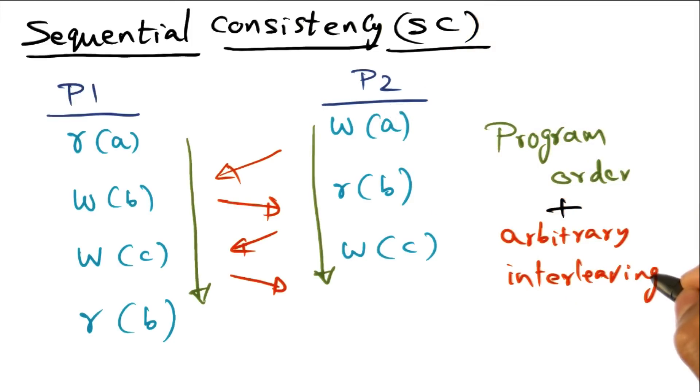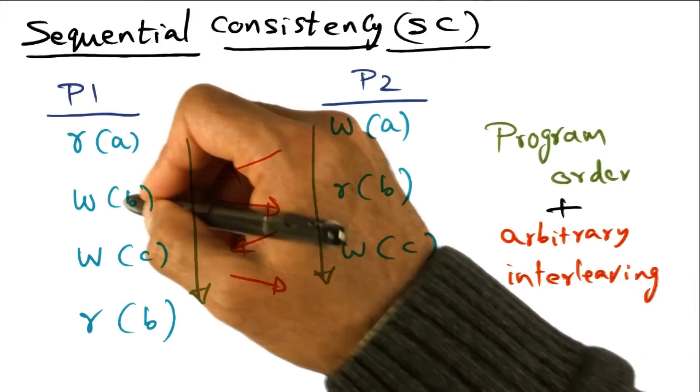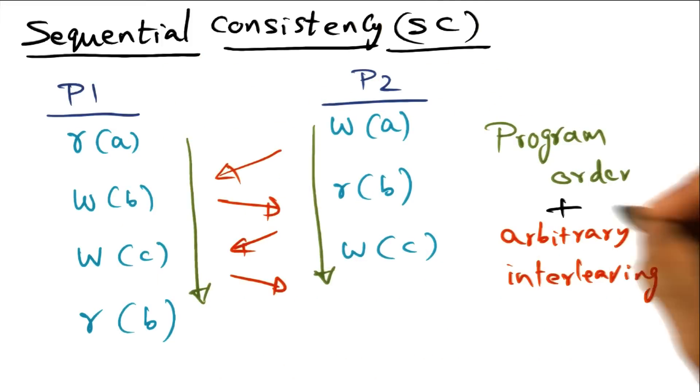This is where sequential consistency model says that the interleaving of memory accesses between multiple processors, here I'm showing you two, but you can have n number of these processors making accesses to shared memory all in parallel.